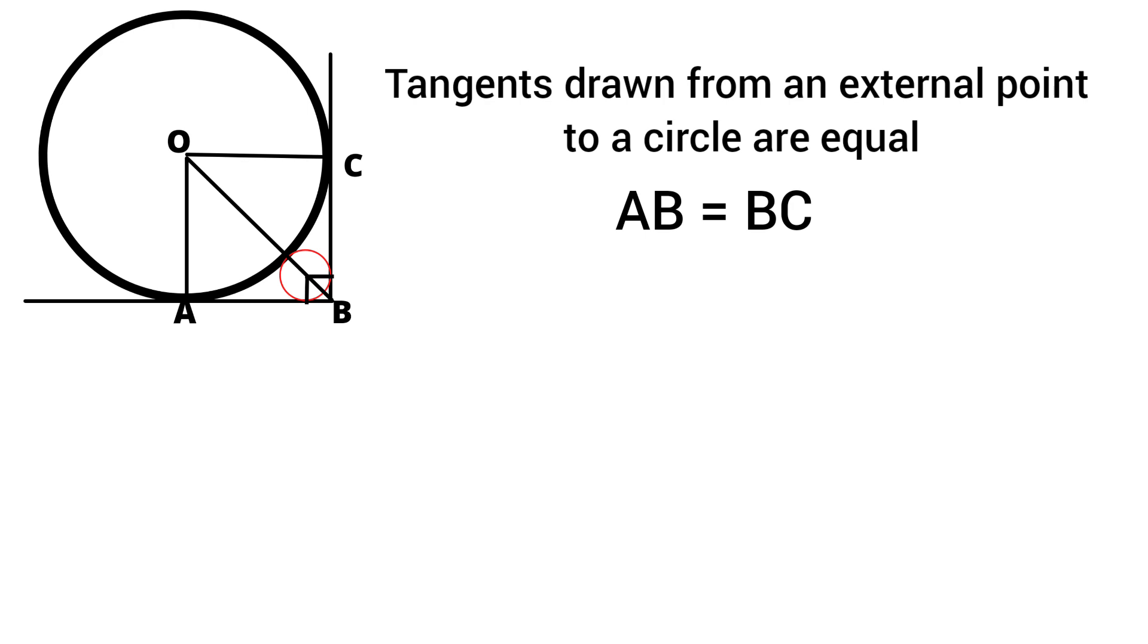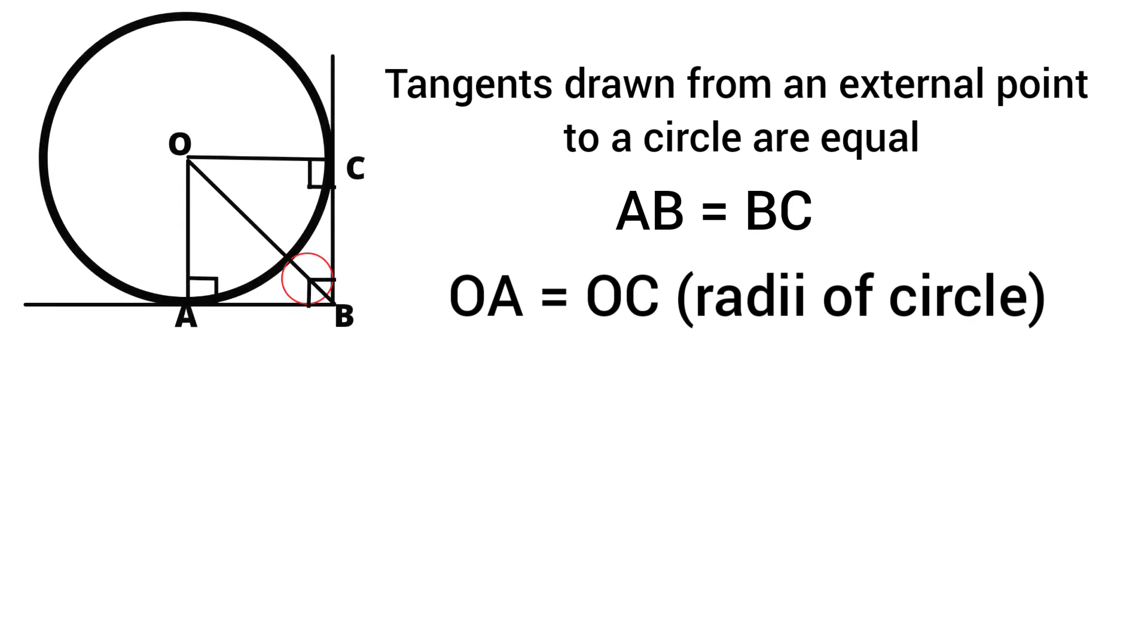Then OA and OC are the radii of that bigger circle, so they are also equal to each other. And we know that tangents always make right angle with the radius at point of contact. So angle A equals 90 degrees, angle C equals 90 degrees, and it is already given that angle B is 90 degrees. Therefore, OABC is a square of side length 2 cm.